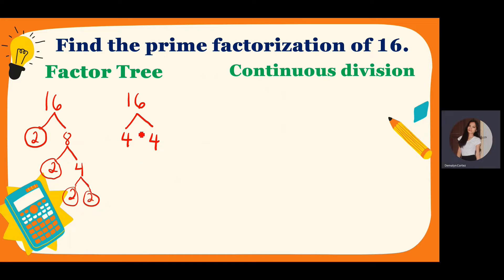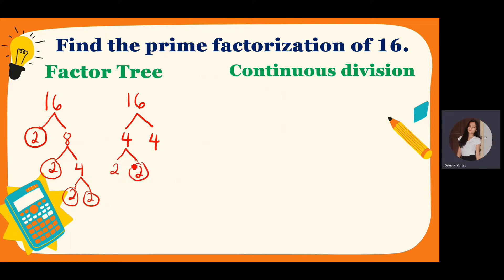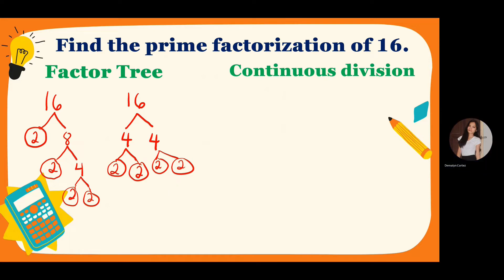Let's try this another way. So 4 times 4 — another factor pair of 16. So 4 and 4 are still composite numbers, so we can still break them down. So 2 times 2 is 4 — encircle that, it's already prime. And then another 2 times 2 is 4. You can see it's just the same. If a number has more factors, just pick one pair and use it to get the prime factorization.